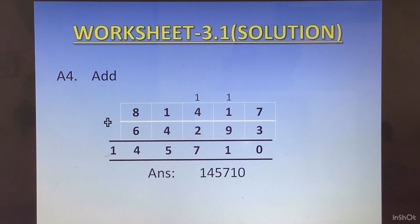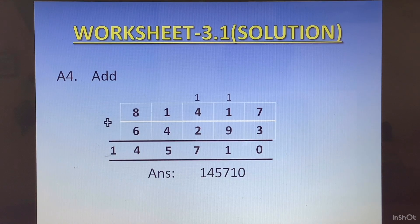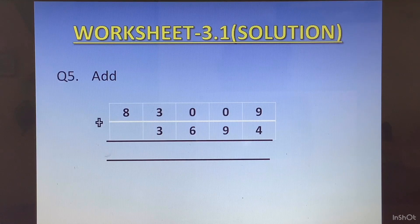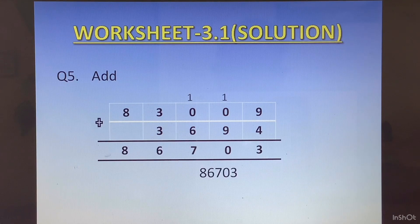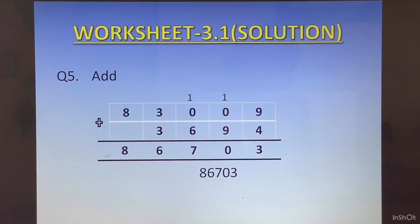Question 3: 81417 plus 64293 and the answer is 145710. Question 5: 83009 plus 3694 and the answer is 86703.